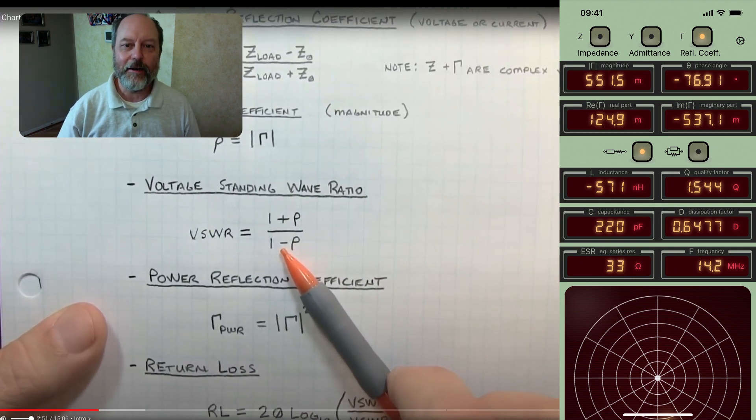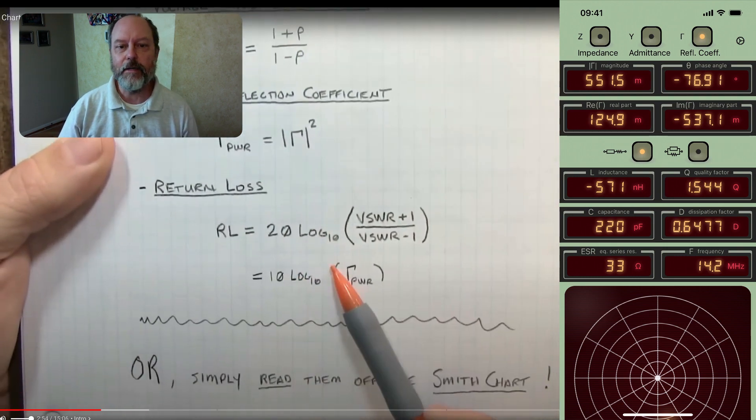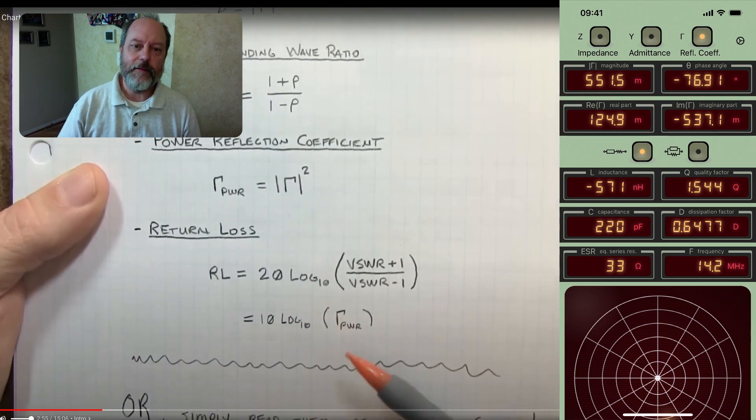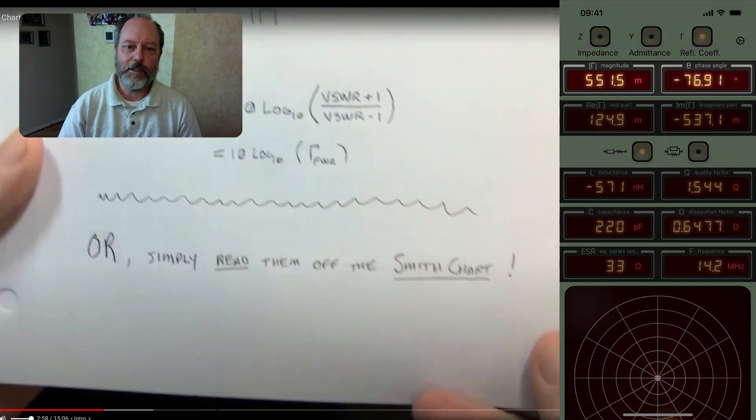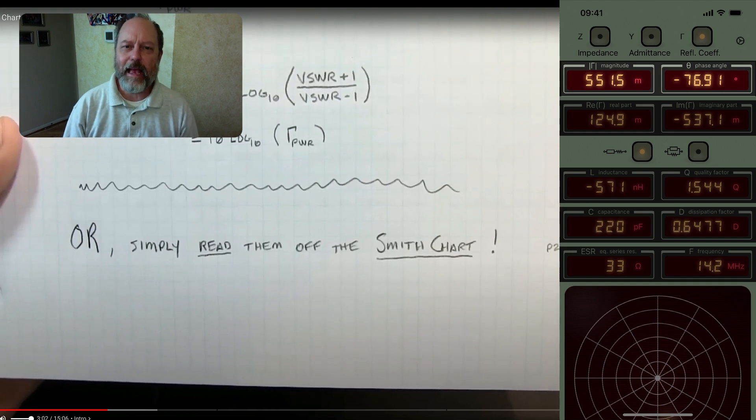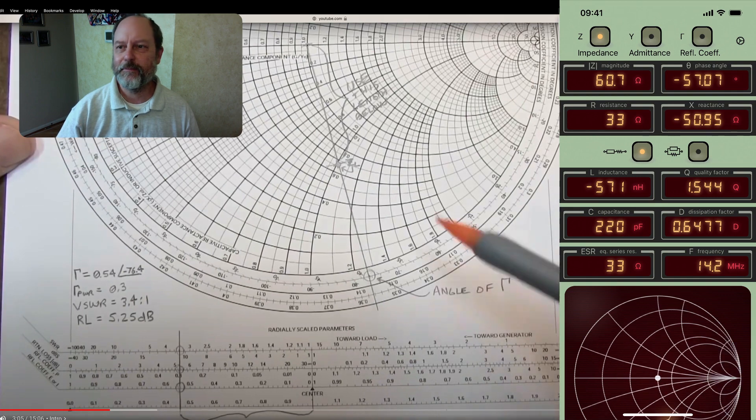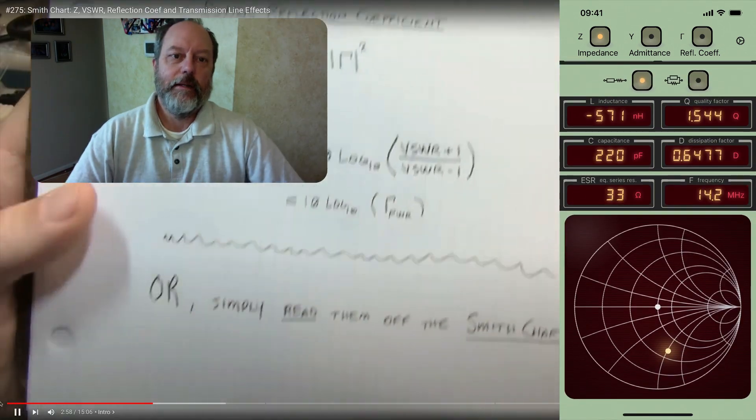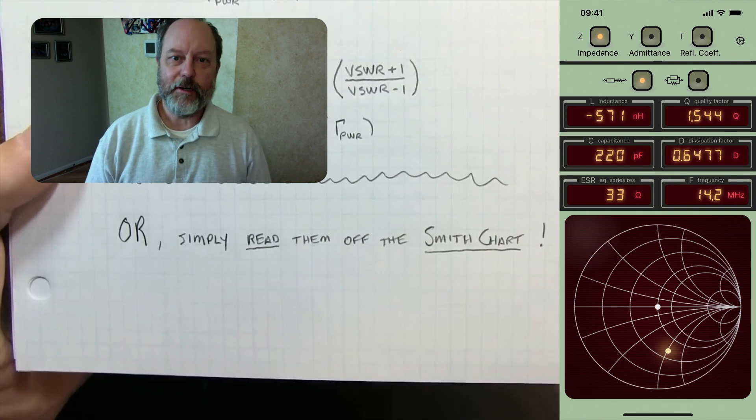In fact, the Smith chart is really just a plot of reflection coefficients. And you can see in this view in the app, you can see that the reflection coefficient has a magnitude of a little bit more than half, and the angle is negative 77 degrees.